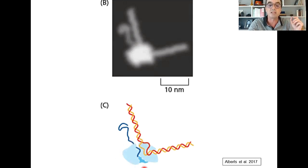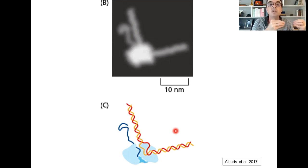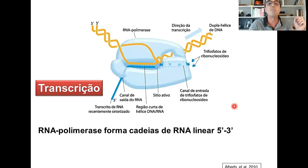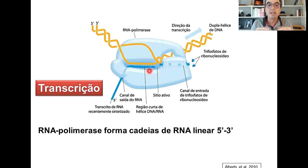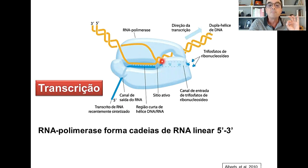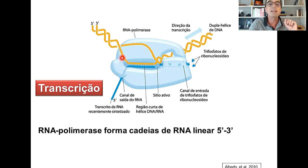A principal enzima envolvida nesse processo é a RNA polimerase. A exemplo da DNA polimerase que sintetizava DNA, a RNA polimerase sintetiza RNA. Aqui, com um pouquinho mais de detalhe, vemos uma RNA polimerase se ancorando, se acoplando ao trecho de DNA que precisa ser transcrito para gerar uma proteína mais tarde. Ela vai se ligar ao DNA e vai promover a separação de um pequeno pedaço da dupla fita de DNA, formando o que chamamos de bolha de transcrição. Apenas uma das duas fitas de DNA vai servir de molde — a outra não será transcrita.